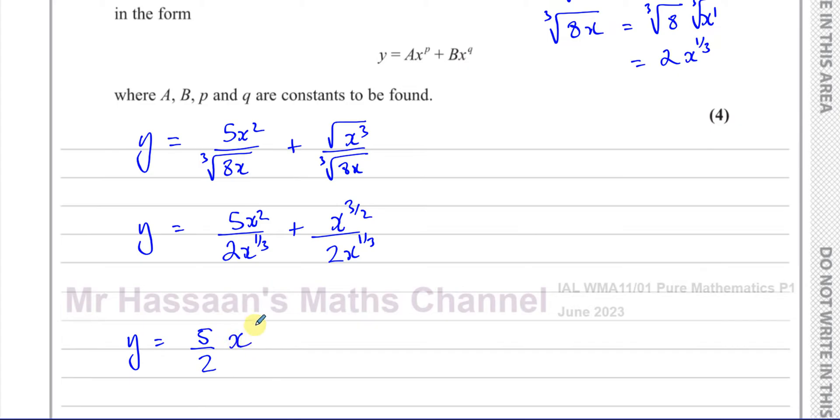Now we have simplified everything and made it into index form from surd form. We can write this as 5 over 2, and when you divide two numbers in index form with the same base, you subtract the powers. So it's x to the power of 2 minus 1 third.